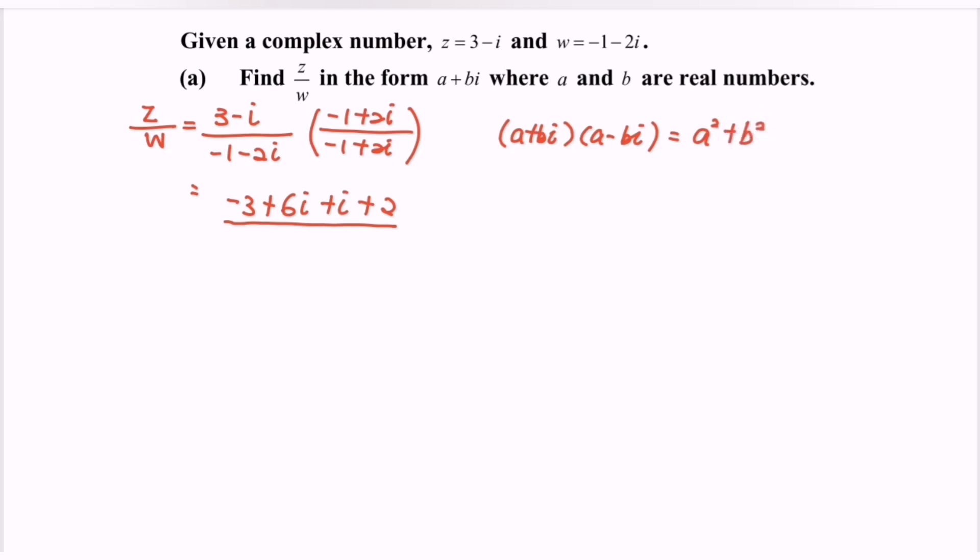For this case, a = -1, so squaring gives us 1. For b, the value is 2, and squaring gives us plus 4.